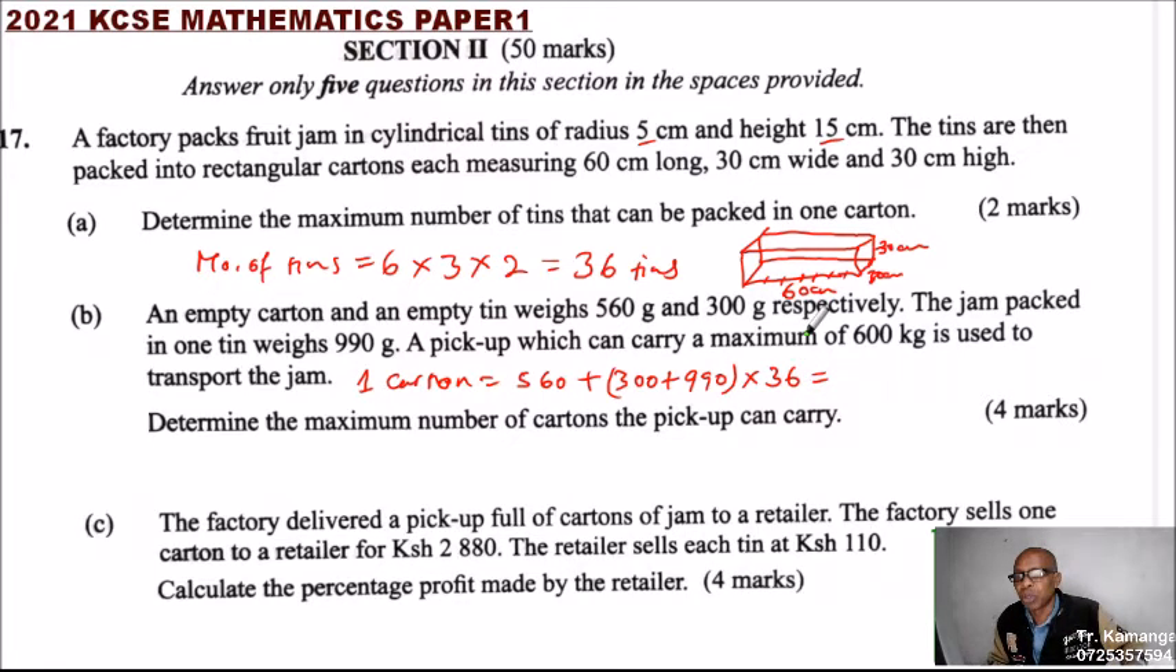Let's start again: 300 plus 990 equals—you multiply by 36, you get that, and you add 560. That should give you 47,000 grams.